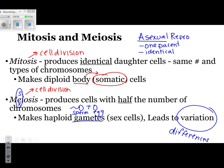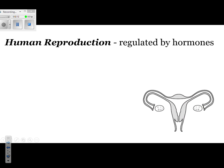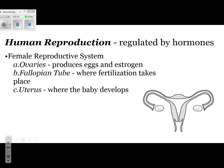On to human reproduction. Human reproduction is regulated by hormones. For the female reproductive system, there are three major parts you need to be familiar with — you need to name them and identify their function. First is the ovaries. Ovaries produce eggs and estrogen, which is one example of a hormone.